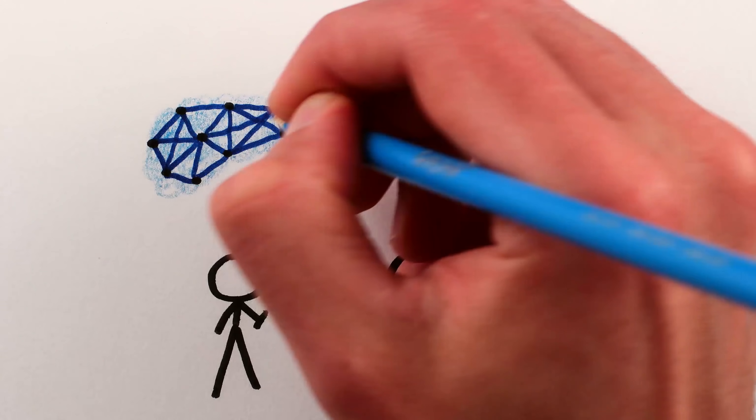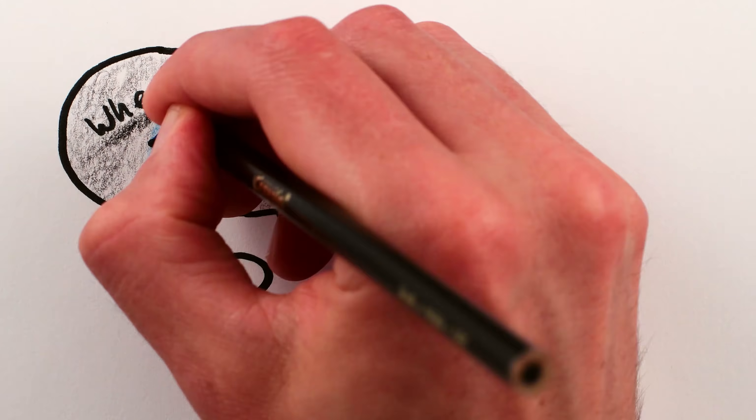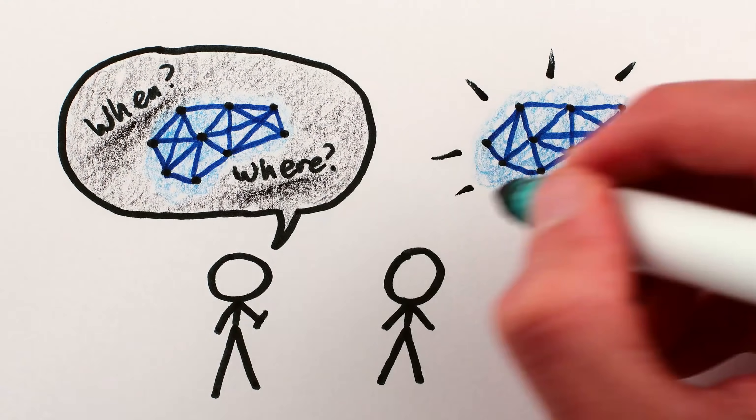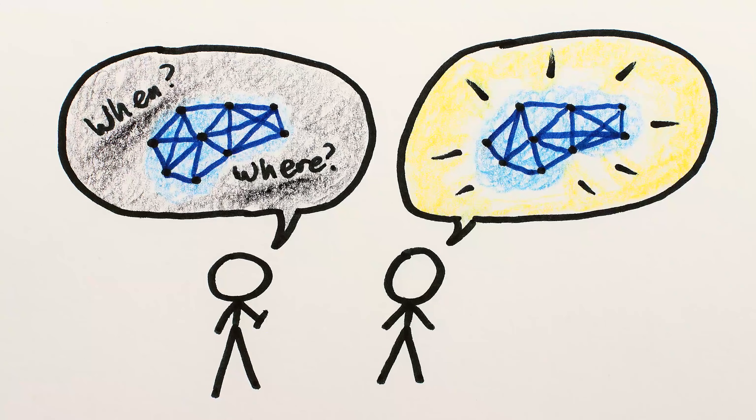And when exactly is super-intelligence going to arrive? When do we need to start panicking? First of all, Henry, super-intelligence doesn't have to be something negative. In fact, if we get it right, AI might become the best thing ever to happen to humanity.